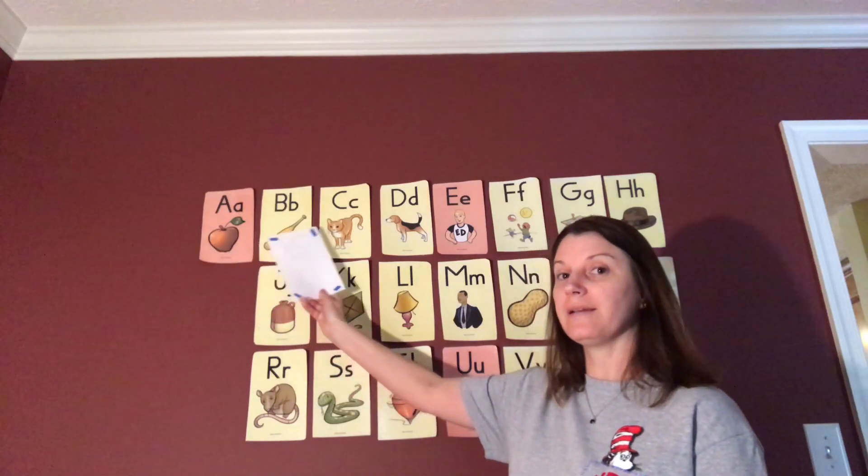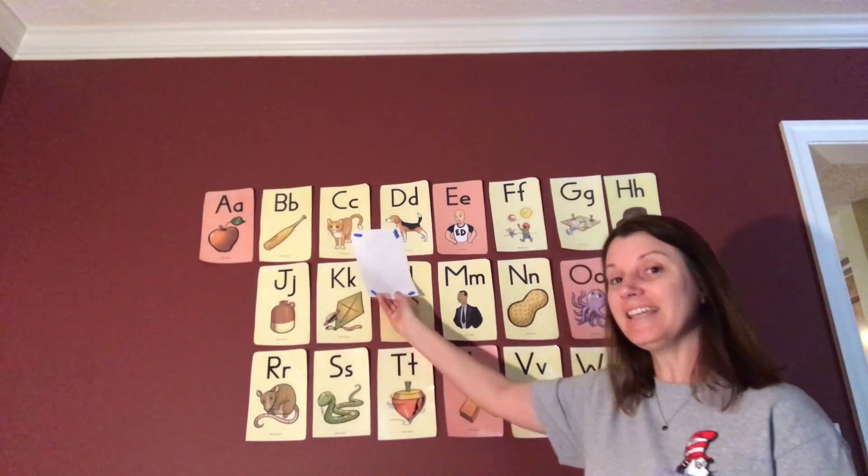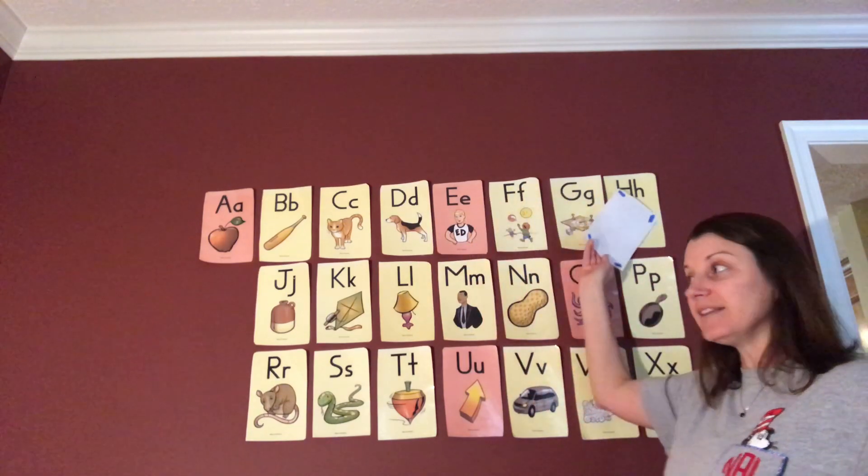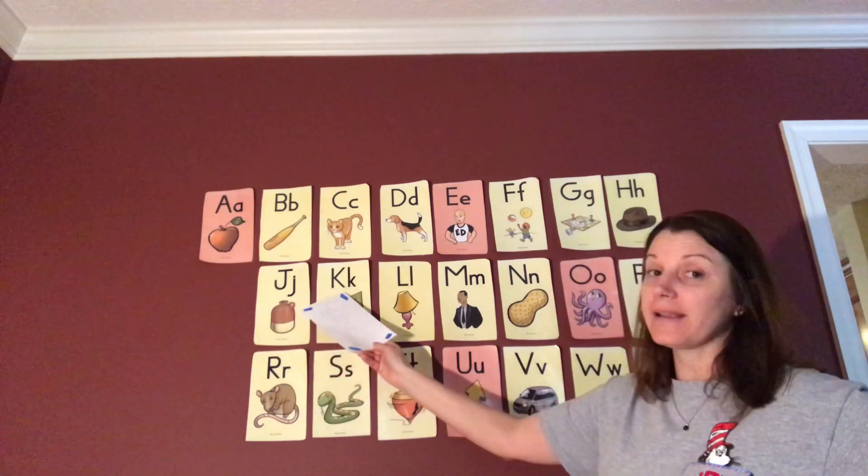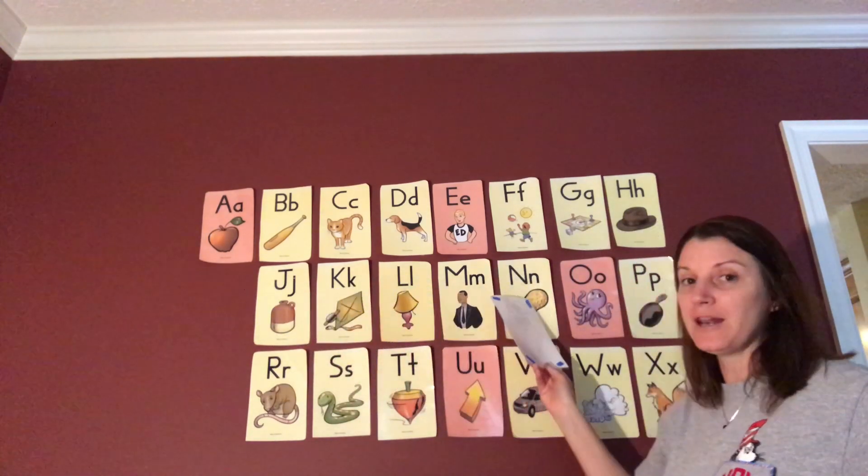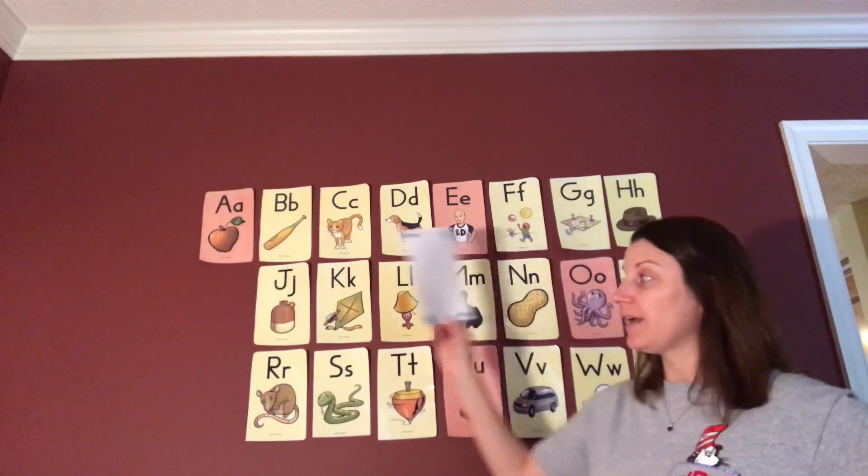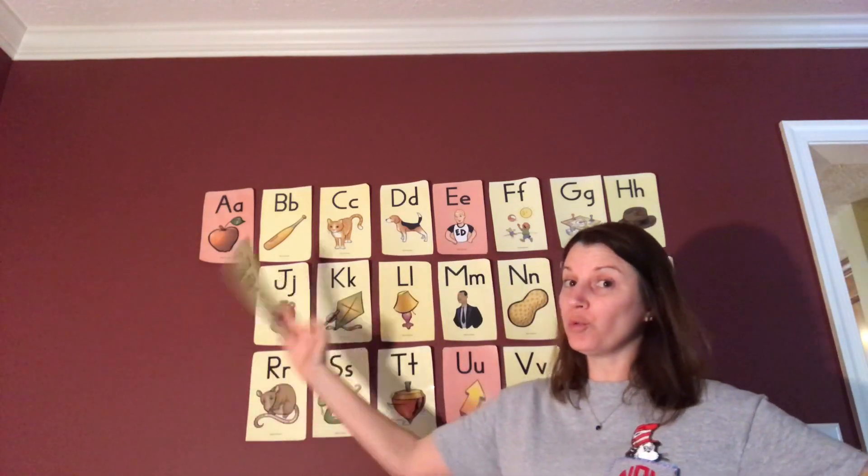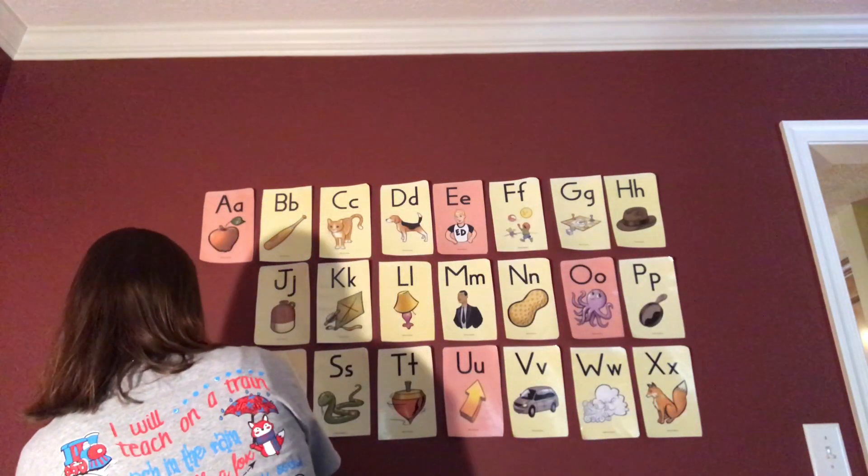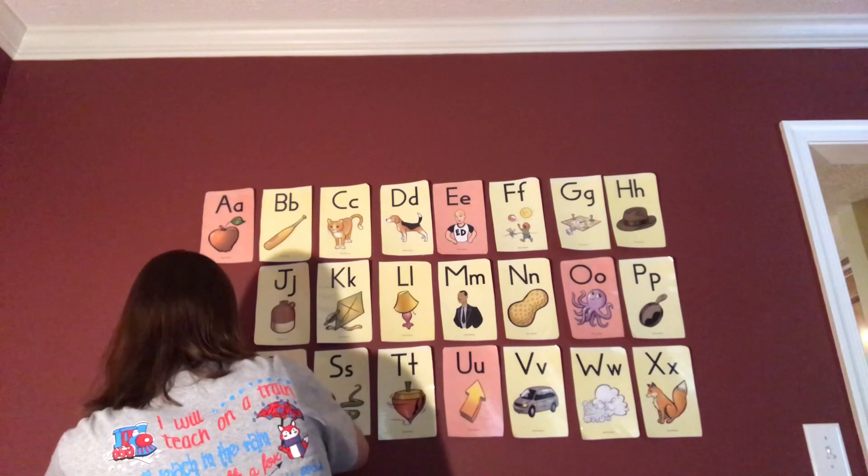So we have A, B, C, D, E, F, G, H. I will go here. J, K, L, M, N, O, P, Q. So we're going to put our Q card right before the letter R. Put it on there.